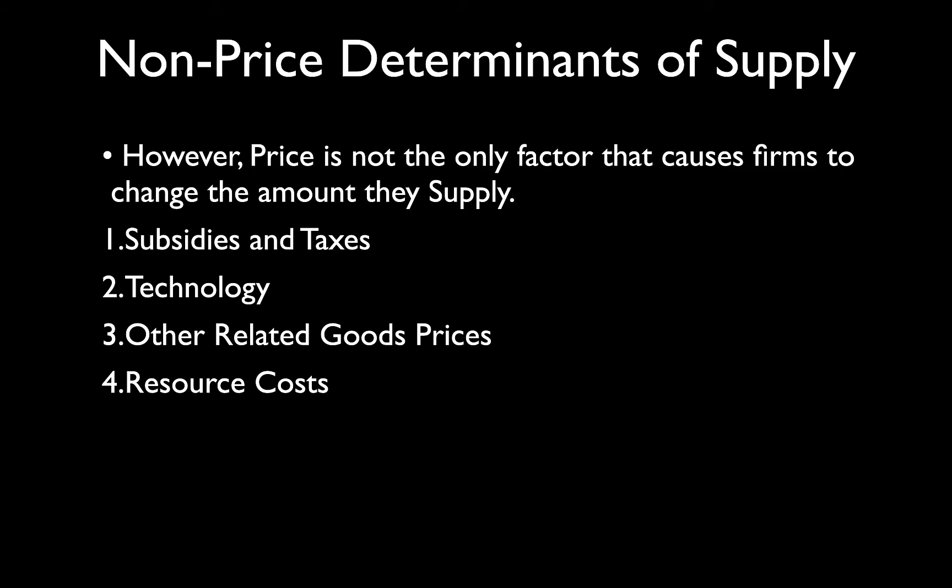Just to be clear, what we've already covered: changes in subsidies and taxes and how they can cause the supply curve to shift in and out, changes in technology, changes in other related goods prices, changes in resource costs — and now changes in expectations regarding future prices.